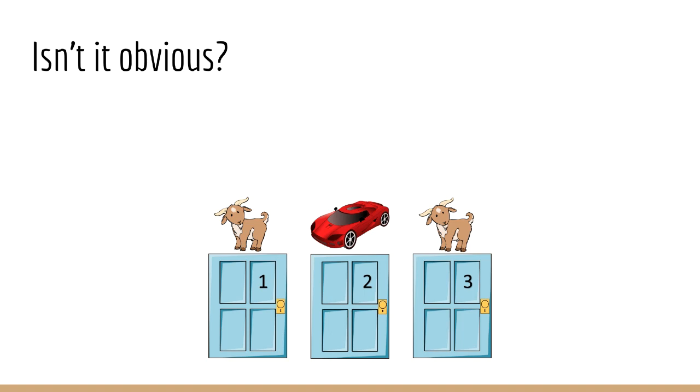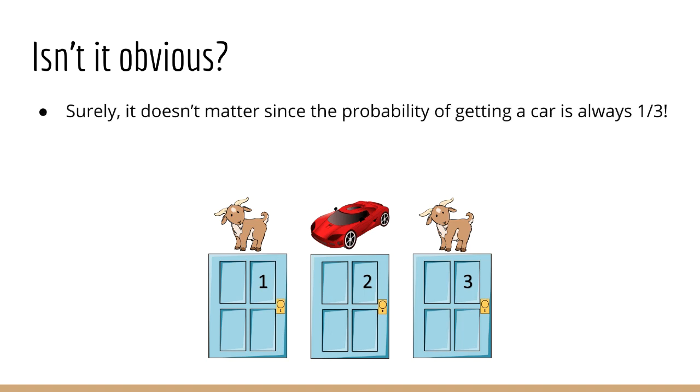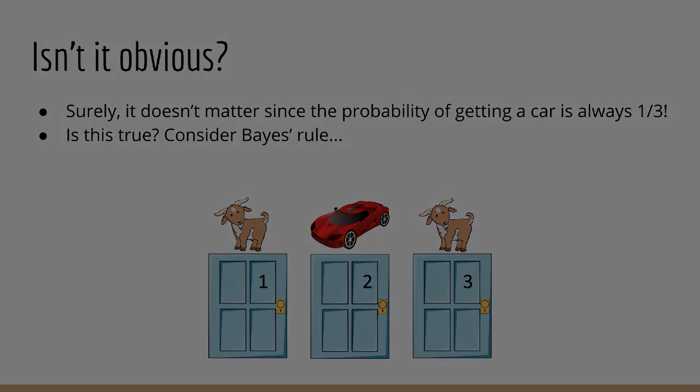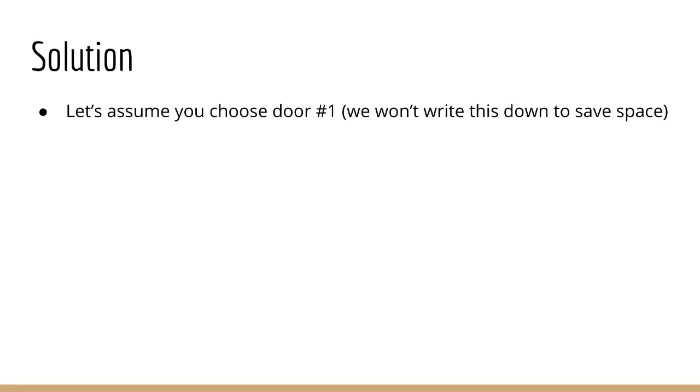Now this might seem like a silly question at first. You might think it doesn't matter if you switch or not, the probability of a car being behind door number one or door number three is still one third. However, if this is the conclusion you came to, I would recommend pausing this video and thinking about it a little more in the context of Bayes rule. I'll give you a minute to think about it, and then you can return to this video.